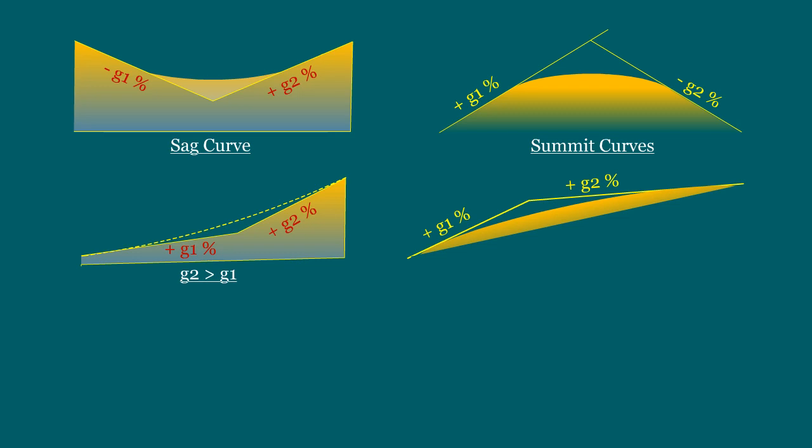The fourth is a positive grade G1 is followed by another positive grade G2, but here the G1 is greater than G2. And the fifth is a negative grade G1 is followed by another negative grade G2. Here, the G2 is greater than G1.